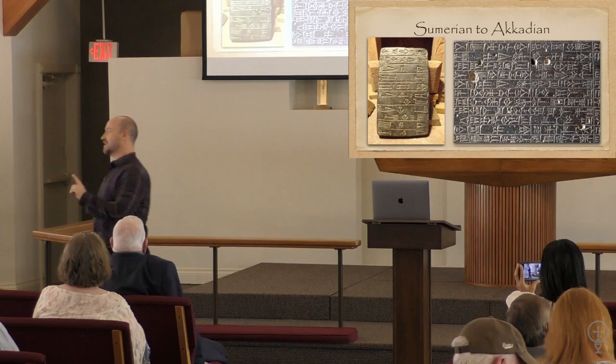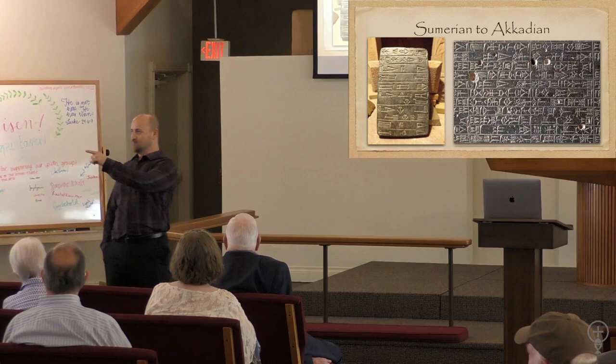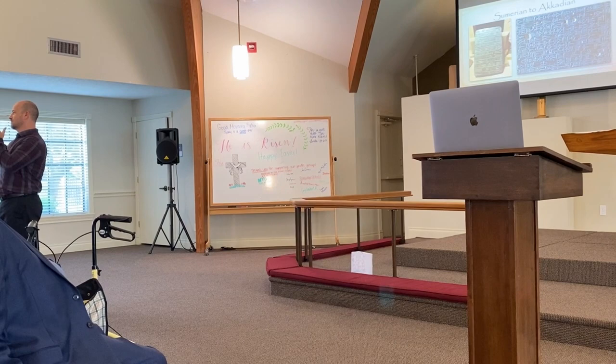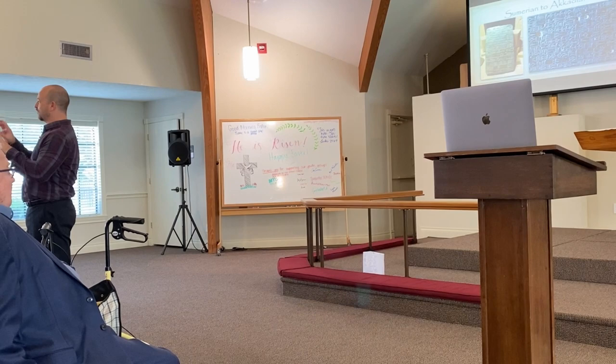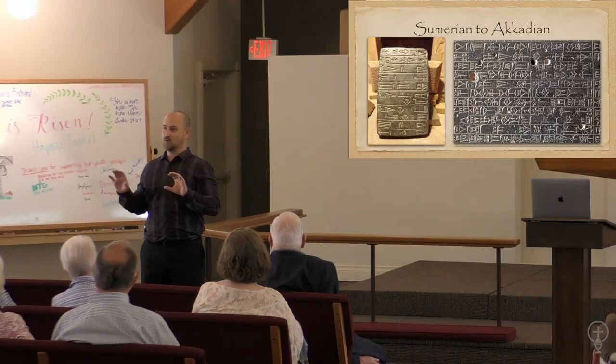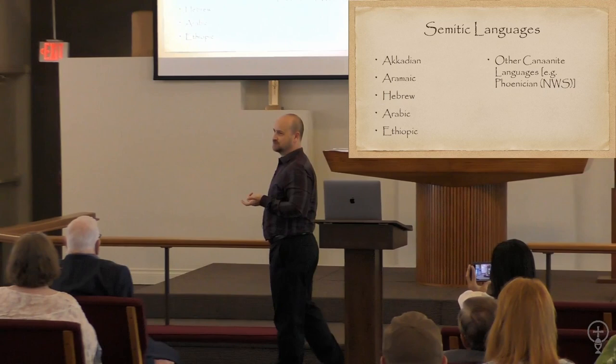Sumerian gets more and more abstract, and then its writing system is adopted by another language that has nothing to do with it. Does anyone know Japanese or Chinese? In Chinese you use pictographic images — if you want to say 'university' you say 'big school.' The Japanese got their writing system from Chinese by adapting and modifying it — that's exactly what happened with Sumerian to Akkadian. People who know Chinese and Japanese know they're nothing alike; they're radically different. Same with Sumerian and Akkadian.